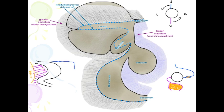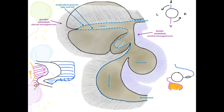The greater omentum is going to be closed along its edge so that it becomes a sac. Eventually that caudal edge of the lesser omentum, which is found at the beginning of the duodenum, becomes an opening known as the epiploic foramen. This opening is the entrance into what is sometimes referred to as the lesser sac, but we know it as the omental bursa, which only has that one opening through the epiploic foramen to gain access to it.